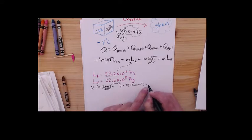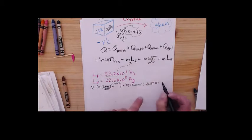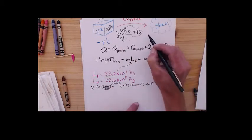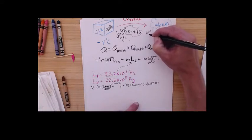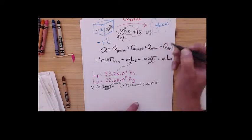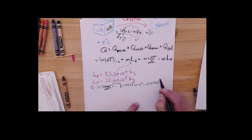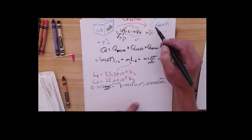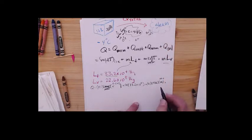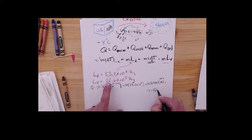The water is 4186. M 0.1, C 4186 times my delta T. I'm going from 0 to...water boils or vaporizes at 100 C. So my delta T here is 100 minus 0, which is 100, plus then I have to boil it away, plus 0.1 times 22.6 times 10 to the 5th.